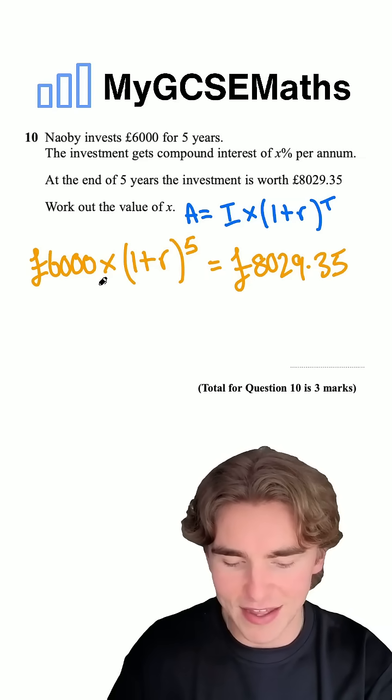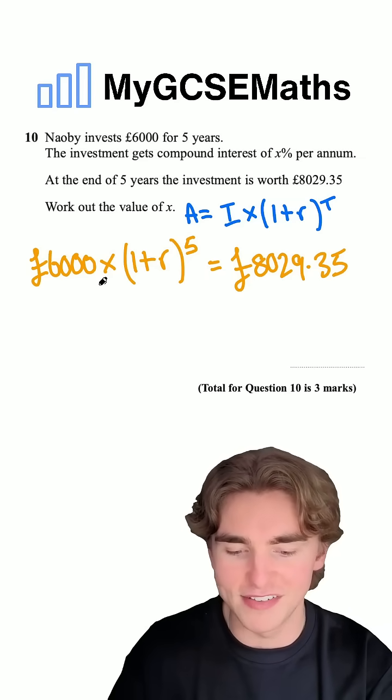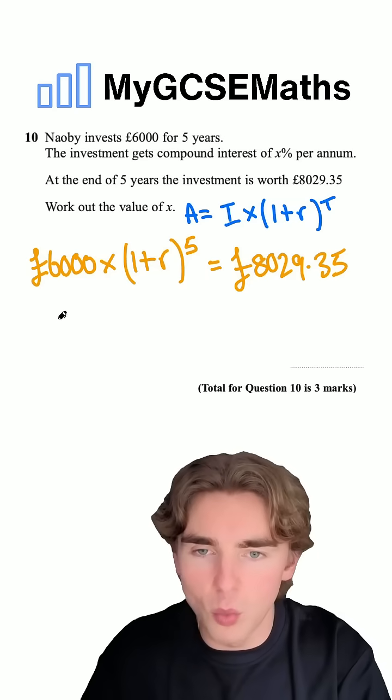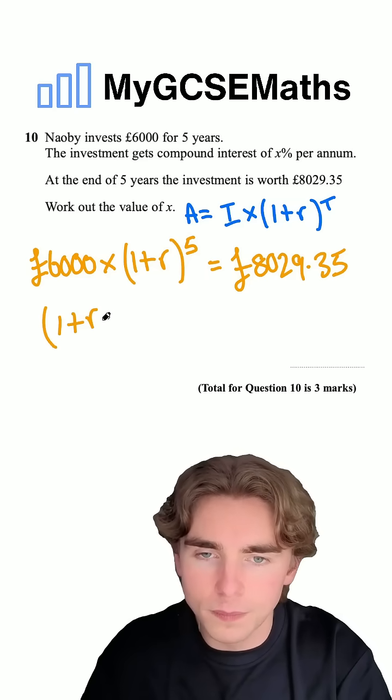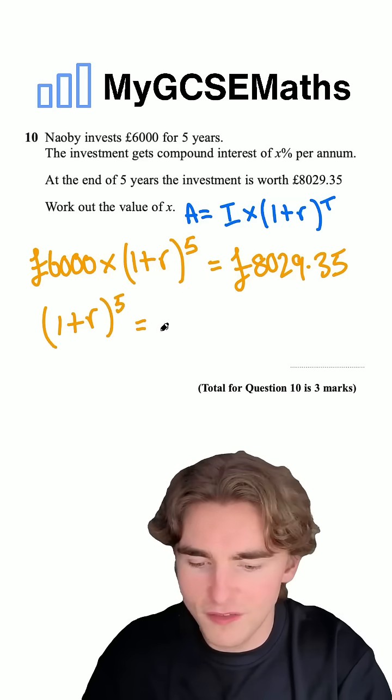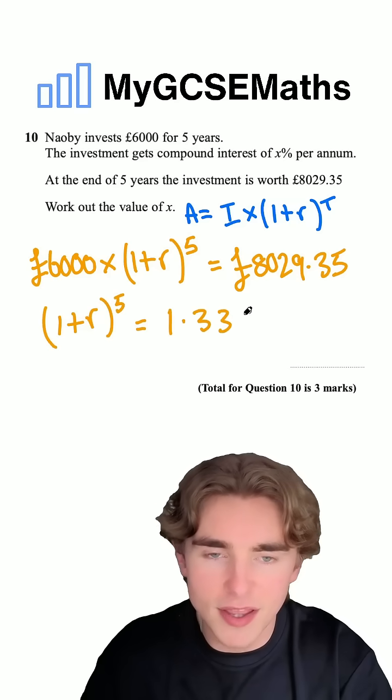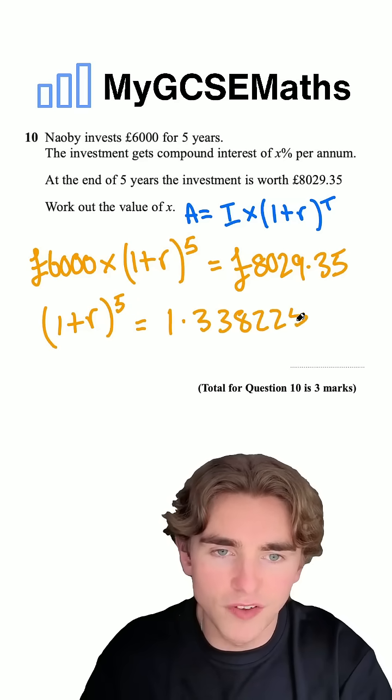So I'm going to type into the calculator, 8,029.35 divided by 6,000. That is going to give me one plus R to the power of five is equal to 1.338225.